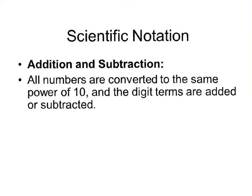When you have numbers in scientific notation and you're going to be adding and subtracting them, you want to make sure that all the numbers are converted to the same power of 10 — the exponent on the 10 has to be the same. Then you add or subtract the digit terms, the coefficients out front. Let's look at examples using that rule.